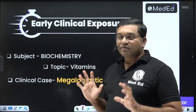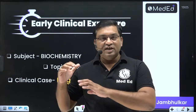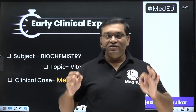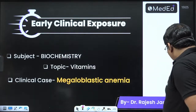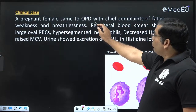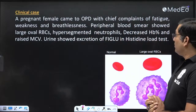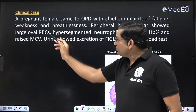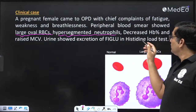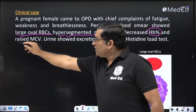We will discuss how to differentiate between megaloblastic anemia due to vitamin B12 deficiency and megaloblastic anemia due to folate deficiency, and how these two vitamins are connected in the folate trap. A pregnant female came to OPD with chief complaints of fatigue, weakness and breathlessness. Peripheral blood smear showed large oval macrocytes, hypersegmented neutrophils, decreased hemoglobin, and raised mean corpuscular volume.